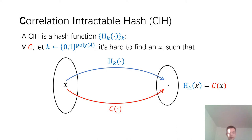The correlation-intractable hash is defined as follows. A correlation-intractable hash function hₖ must satisfy the following property: for any fixed circuit C, if we sample the key k uniformly at random, then it is hard for any adversary to find an input x such that hₖ(x) = C(x).